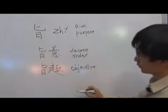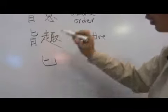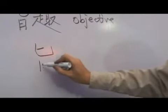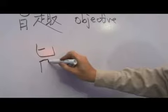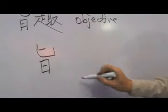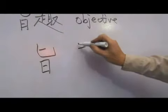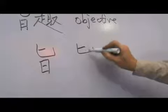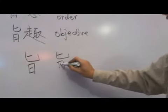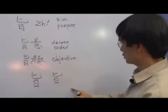Zhī. Hēng, su, wān, gu, su, hēng, zhē, hēng, hēng. Zhī, zhī.